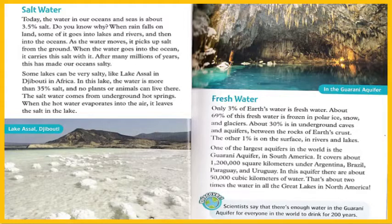Some lakes can be very salty, like Lake Assal in Djibouti in Africa. In this lake, the water is more than 35% salt, and no plants or animals can live there. The salt water comes from underground hot springs. When the hot water evaporates into the air, it leaves the salt in the lake.